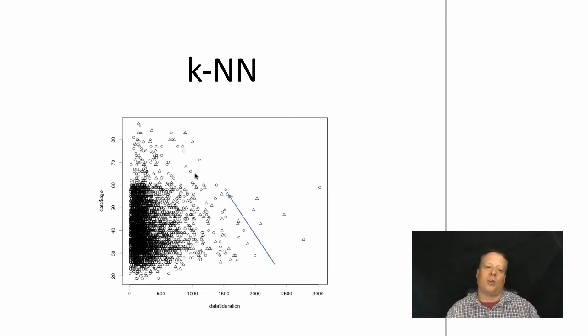So if we're trying to discover, say we don't know what class this triangle in the middle of the screen is, who has a duration around 1,600 maybe and an age of around 58. If we were to use k-nearest neighbors, the first nearest neighbor is actually a circle. So under that policy, we would probably classify this individual, if they were unknown, as a circle, and that would be incorrect as we know.